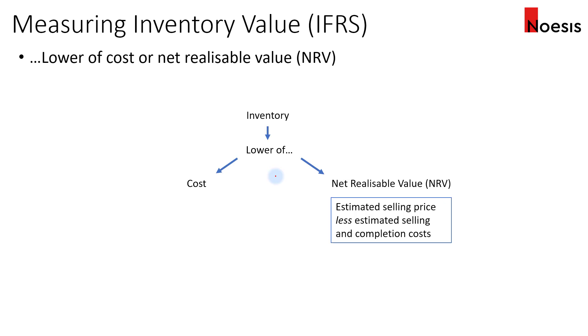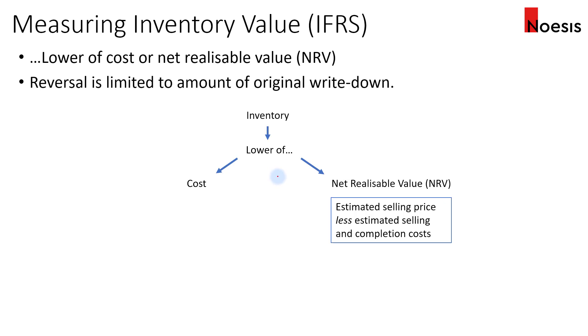Under IFRS, if there is any increase in the net realizable value in subsequent periods, reversal is allowed, but it is limited to the amount of the original write-down.